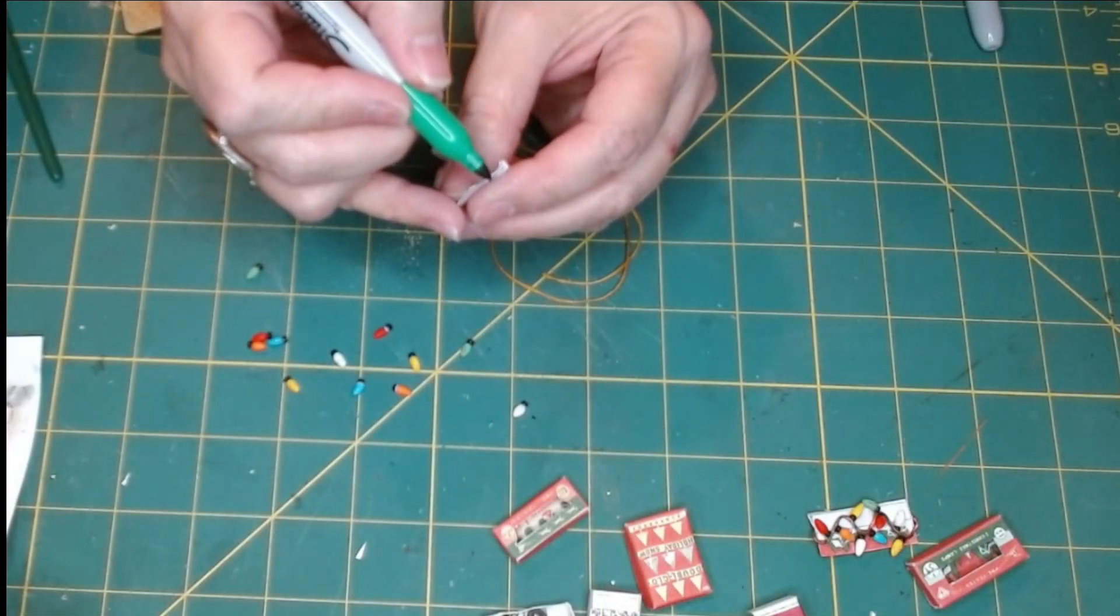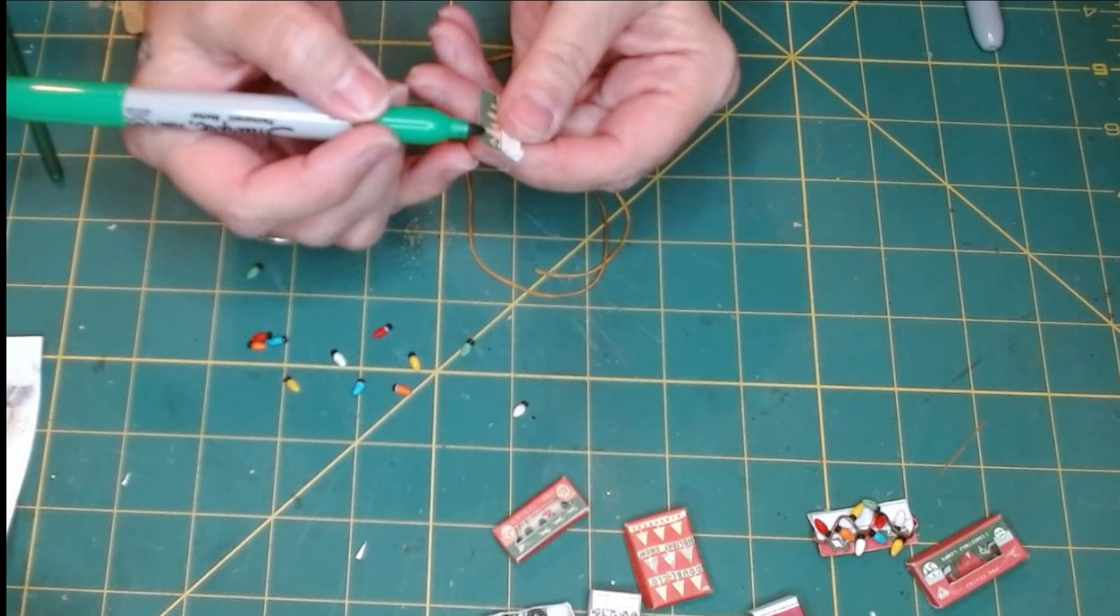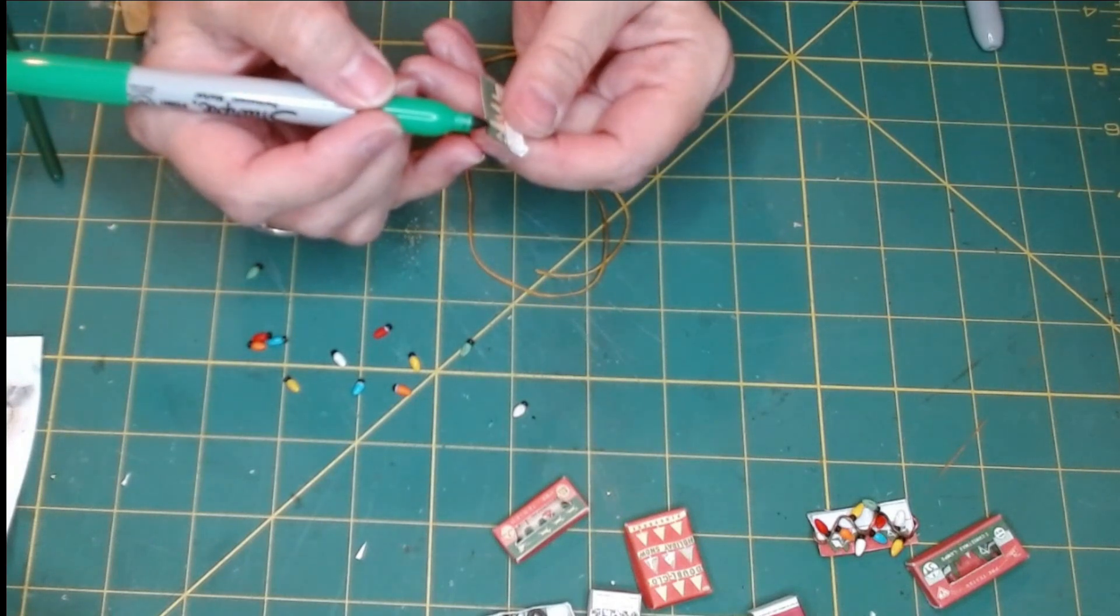I'm using a green sharpie marker to cover up the white edges. I also use a brown one to add some more aging.